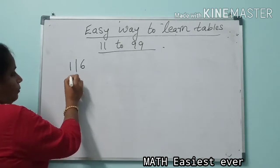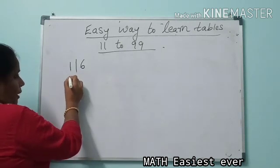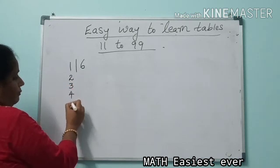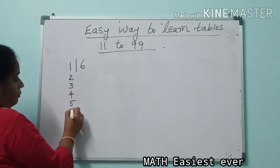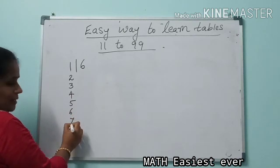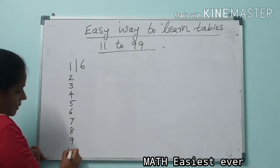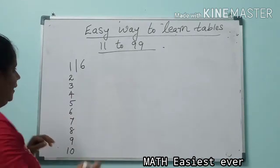Say 1 table: 1 one is 1, 1 two is 2, 1 three is 3, 1 four is 4, 1 five is 5, 1 six is 6, 1 seven is 7, 1 eight is 8, 1 nine is 9, 1 ten is 10.